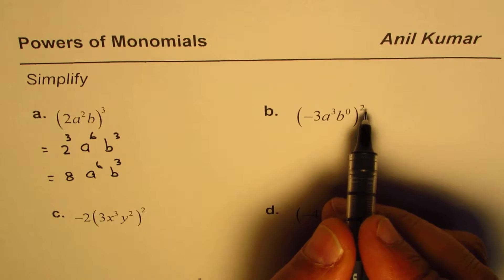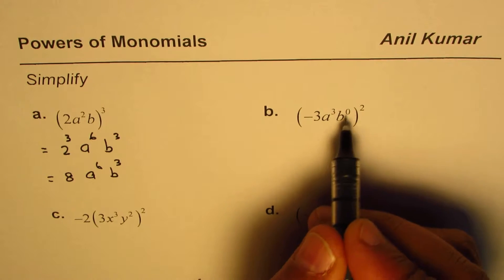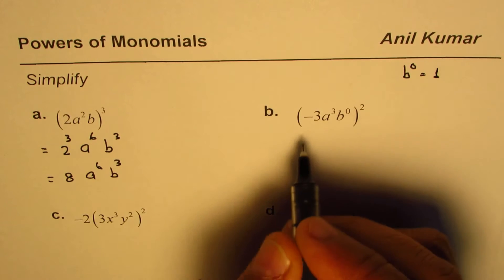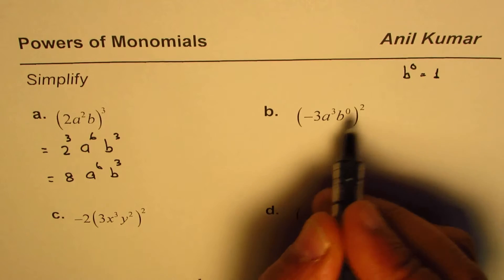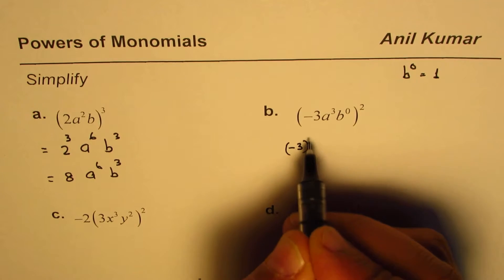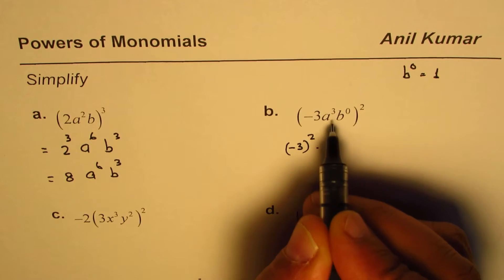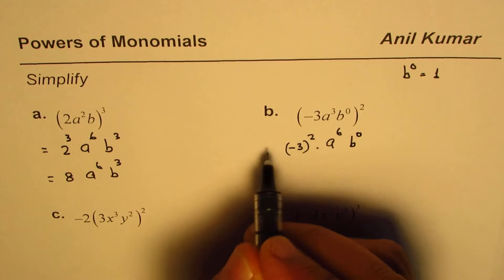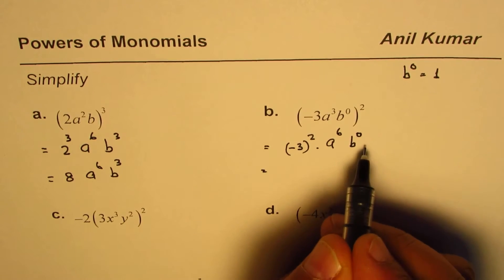Here, everything is squared. Remember, anything to the power of 0 is 1, so b⁰ is actually 1. When we apply the power rule, we get (-3)² times a⁶ and b⁰, which is 1. (-3)² is +9, so we have 9a⁶.